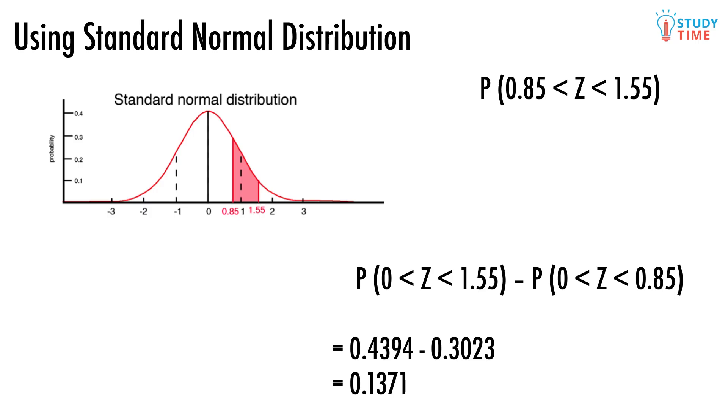When we find the probability that Z is between 0 and 1.55, we get an answer of 0.4394. And when we find the probability that Z is between 0 and 0.85 on the table, we get an answer of 0.3023. So we take one away from the other, and we get our final solution of 0.1371, or a probability of about 14%.